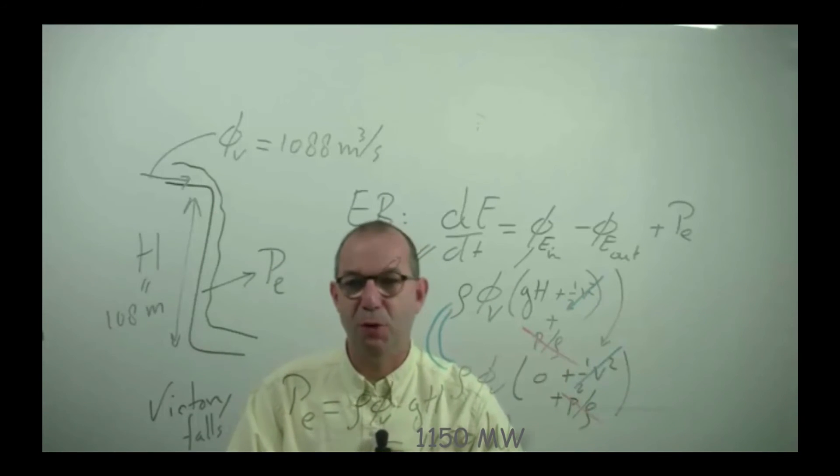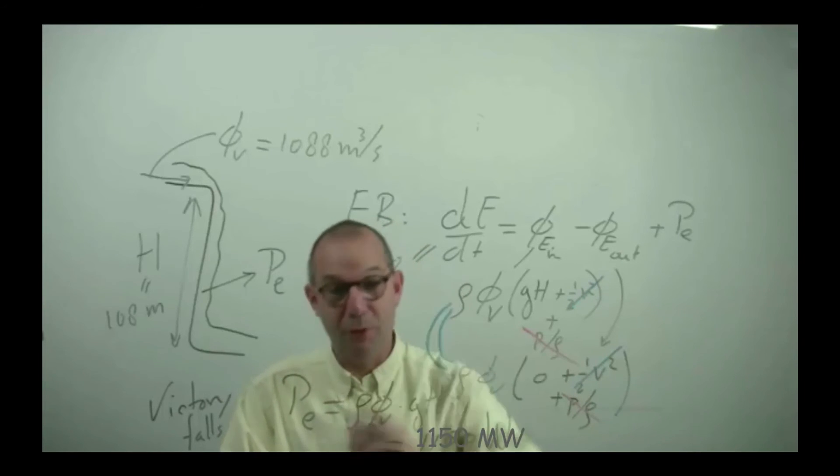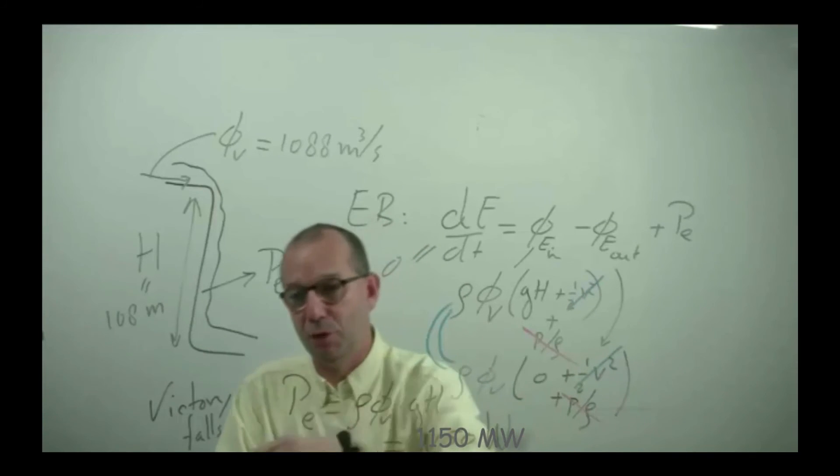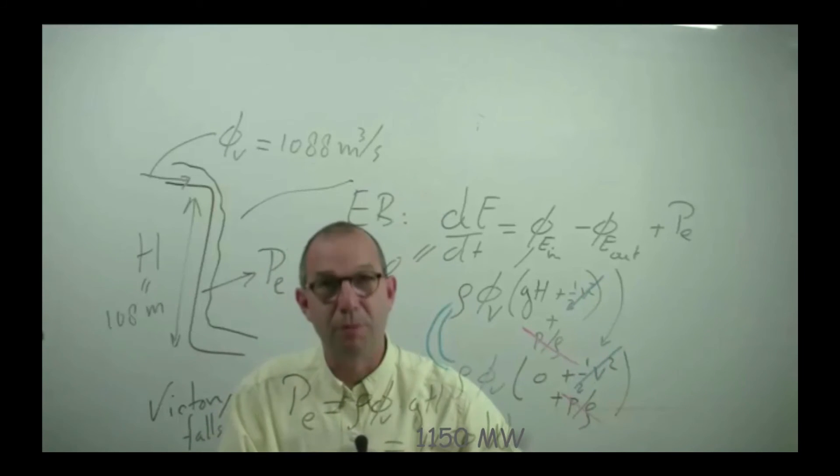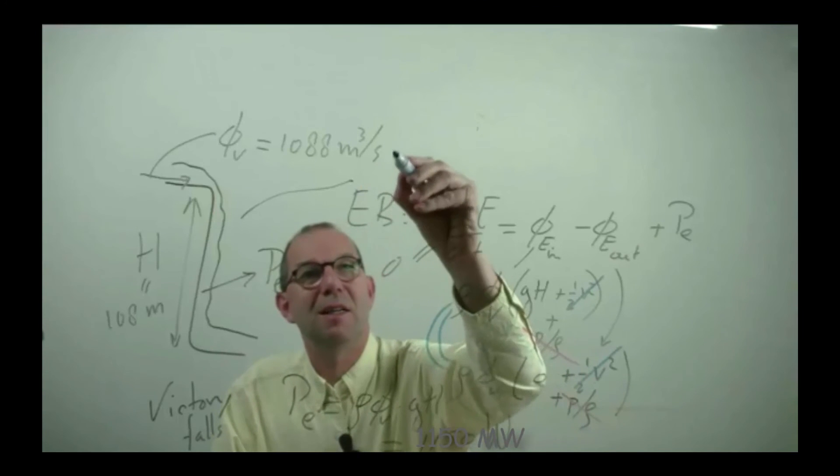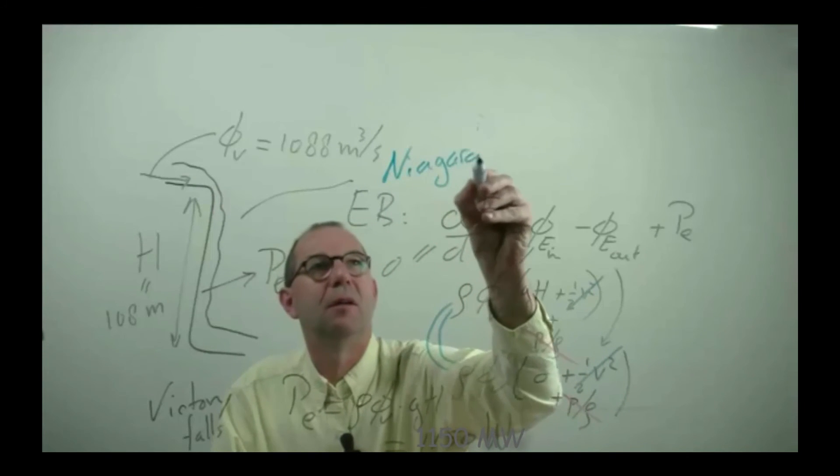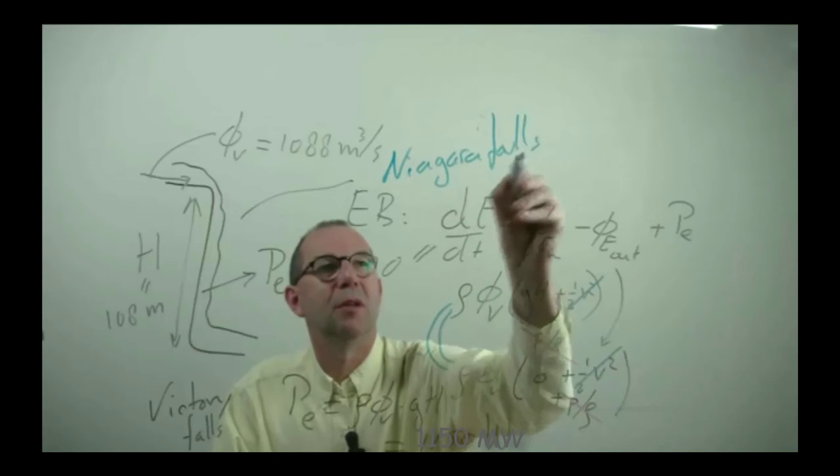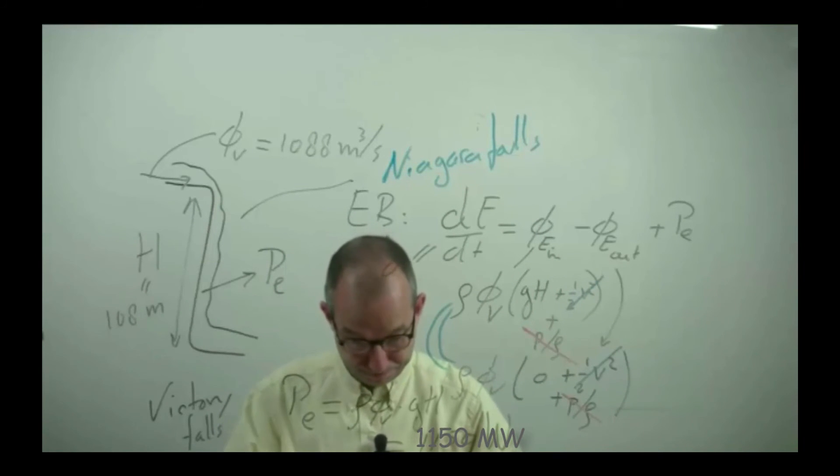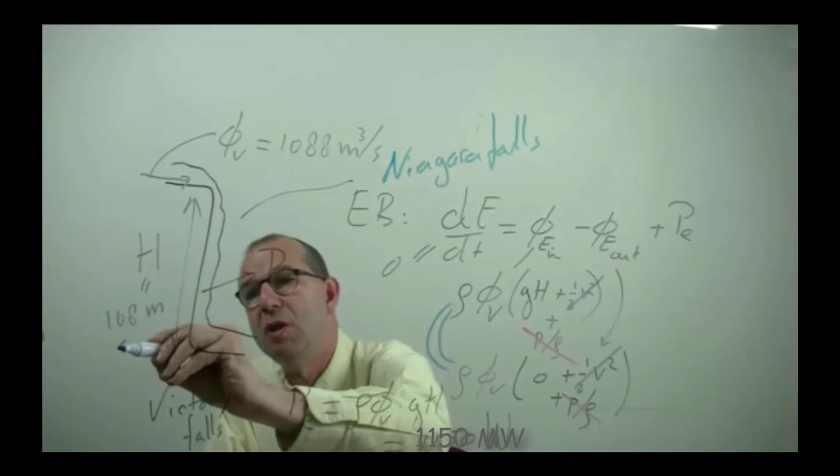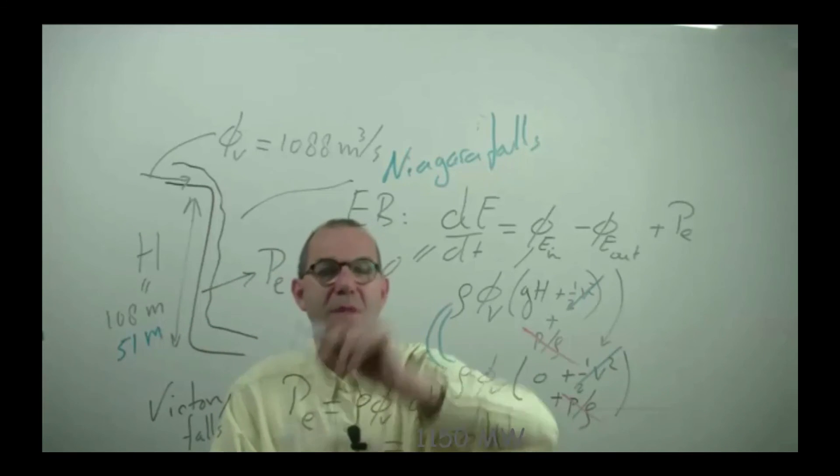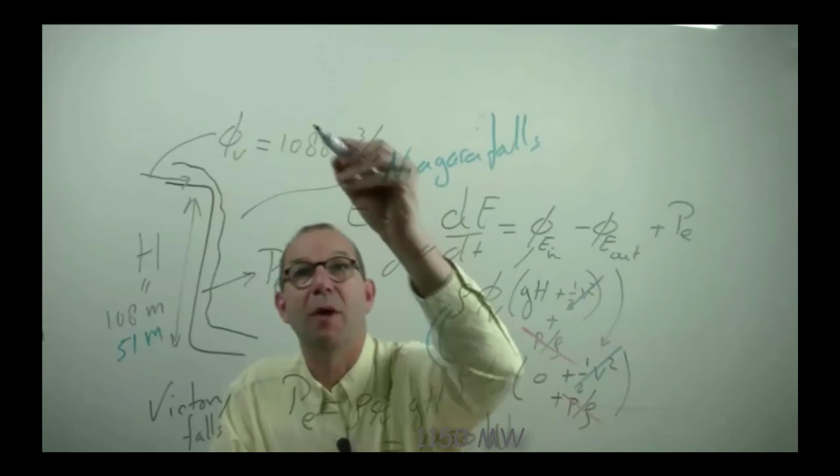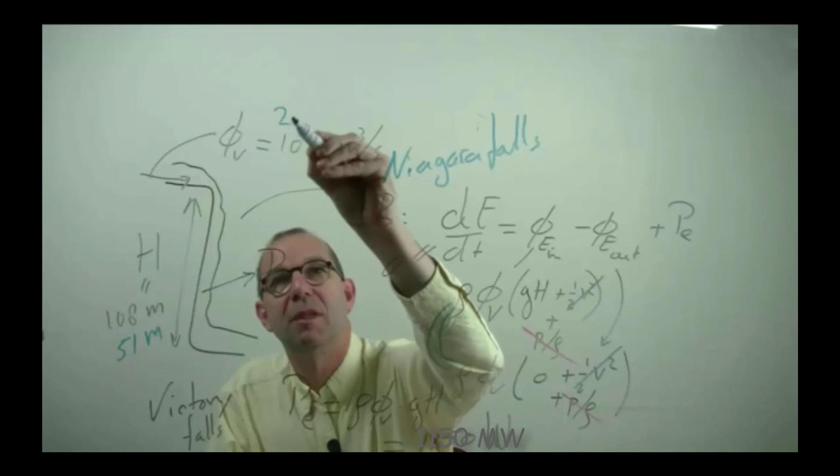Ok, Niagara Falls, huge falls, what the Victoria Falls mean. What if we looked at Niagara Falls. So if this was, let me do it in blue, Niagara Falls. What would change, well the height would change. They are not that big, they are only 51 meters. The flow rate is however bigger, it's more than doubled.